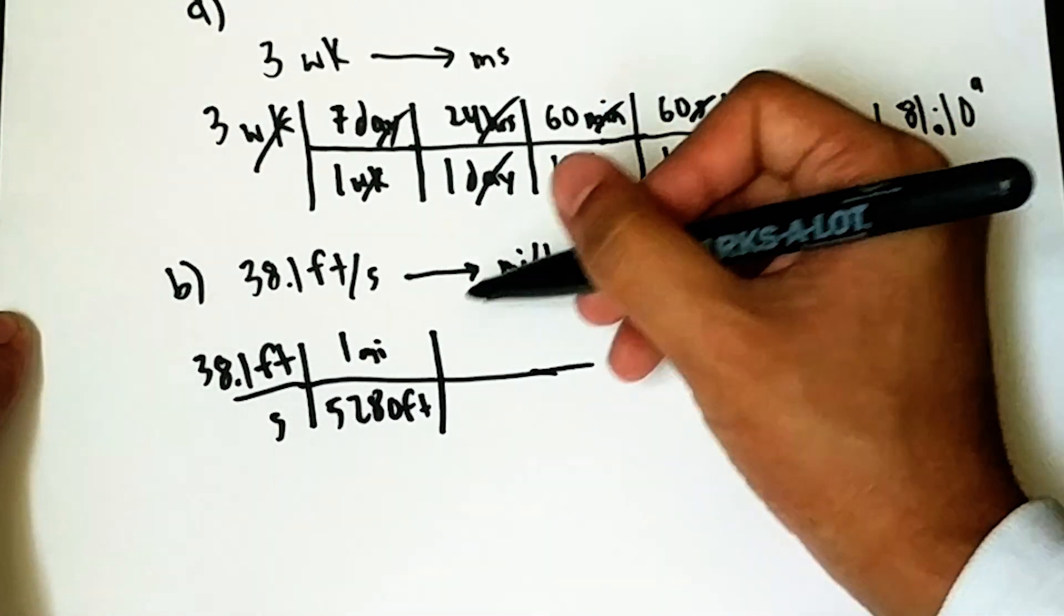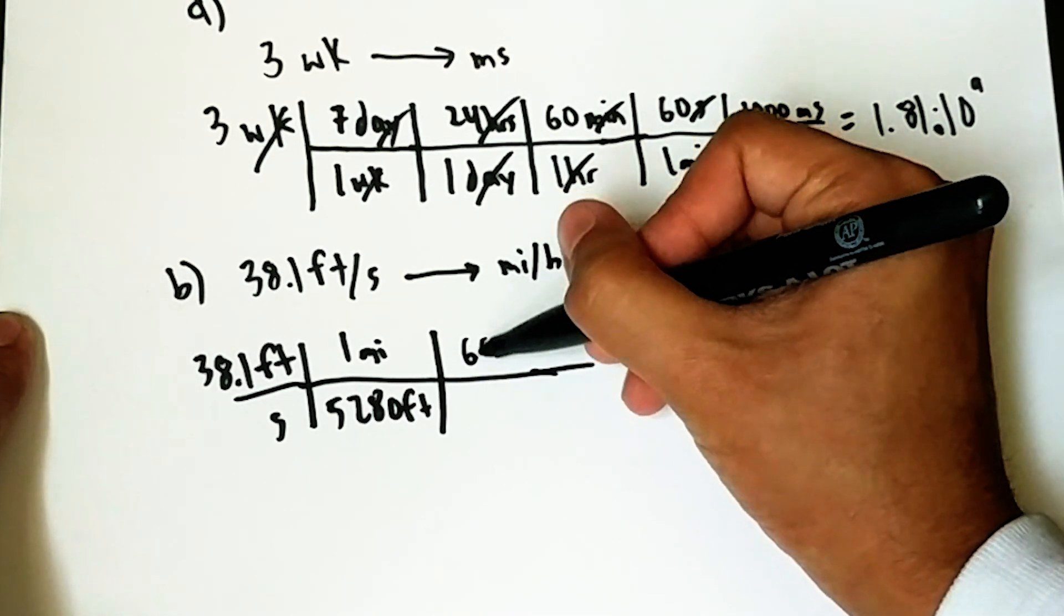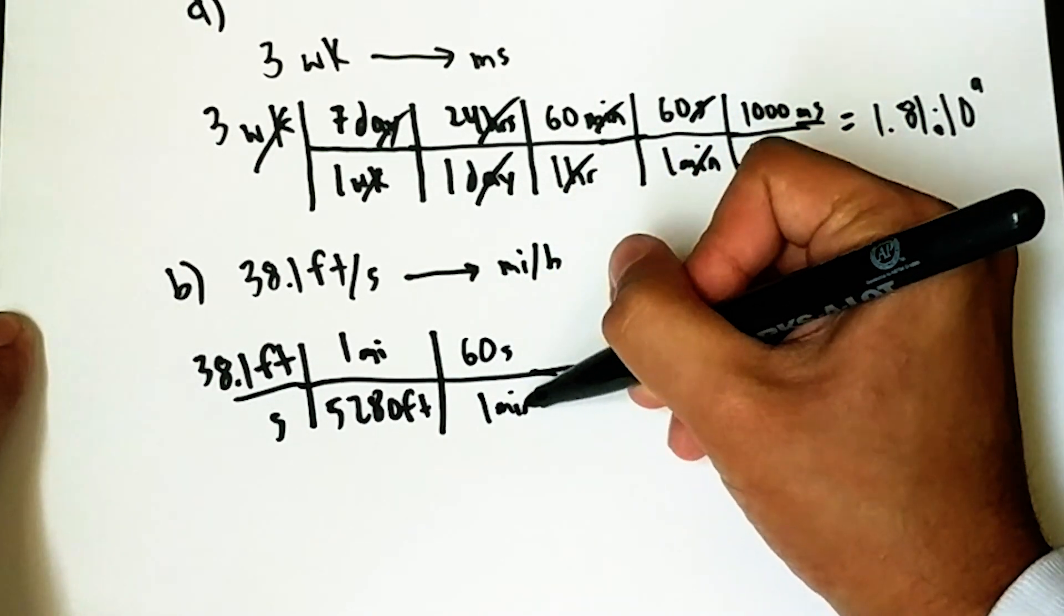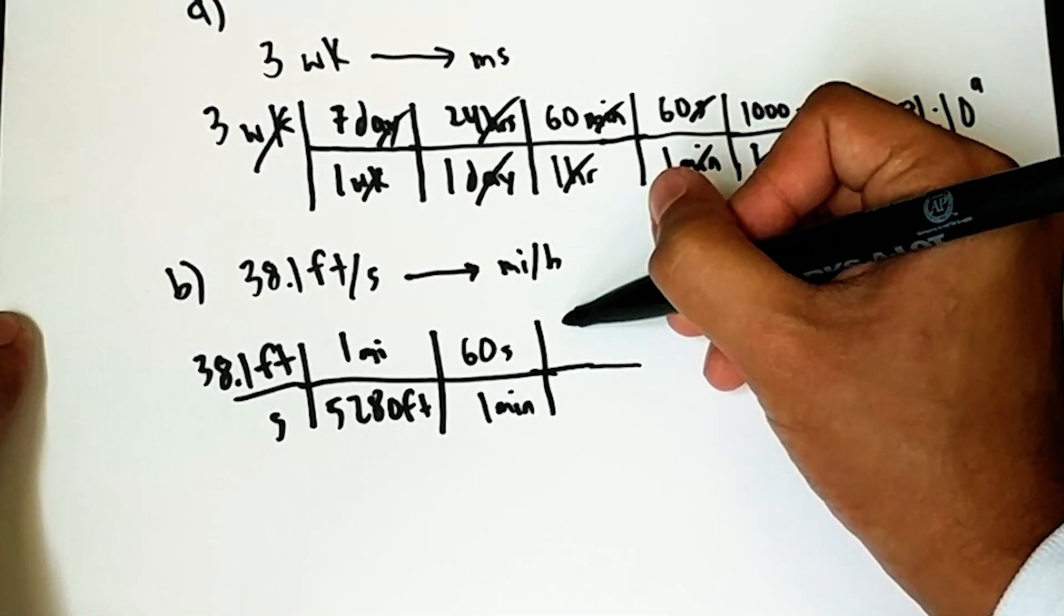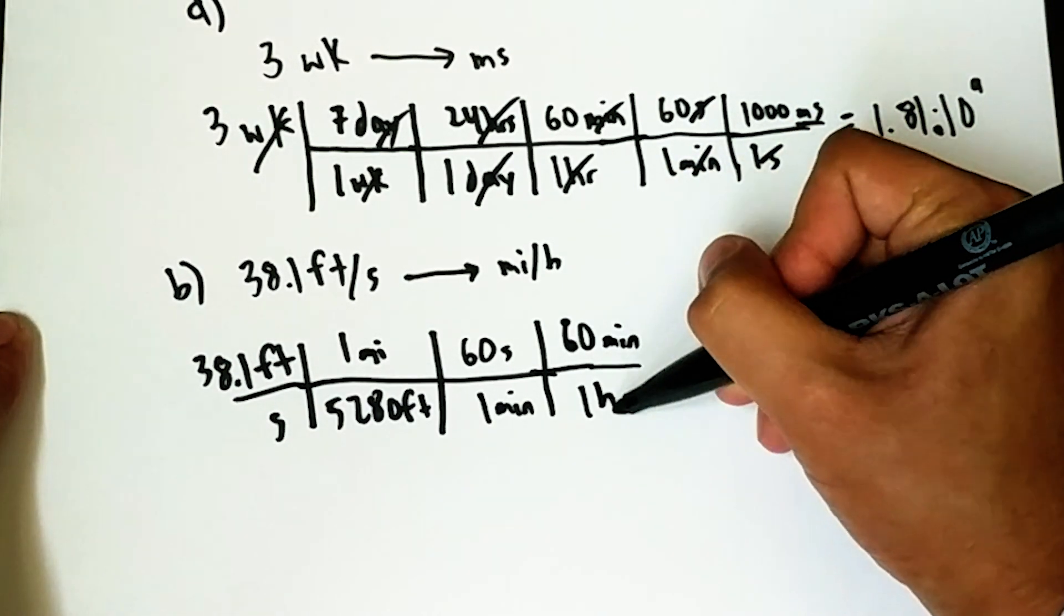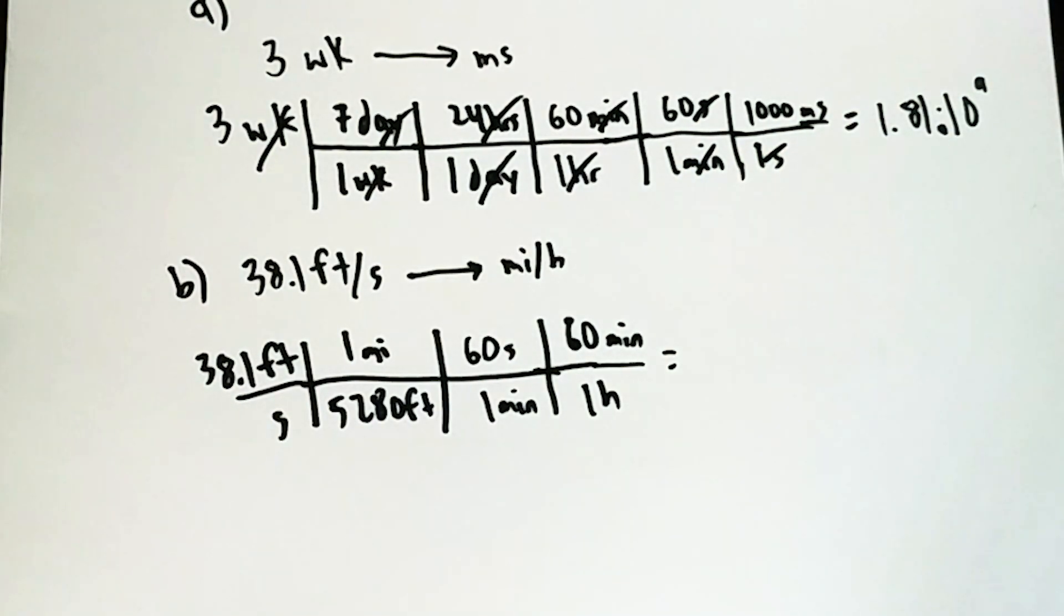So, I remember that there are 5,280 feet in one mile. And we want to convert seconds to hours. So, 60 seconds in one minute. And 60 minutes in one hour. So, again, this was about 25.9.